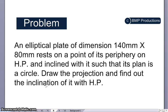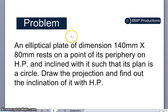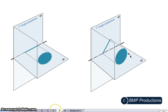This video is about projection of planes. The problem is that an elliptical plate of dimensions 140mm by 80mm rests on a point of its periphery on the horizontal plane and inclines with it such that its plan or top view is a circle. Draw the projection and find the inclination with the horizontal plane.